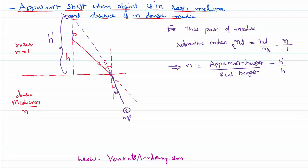The refractive index of any denser medium is always greater than 1, because vacuum equals 1 and any other medium must be greater than 1. This implies the apparent height h dash, as seen by an observer in the denser medium, equals n times h.